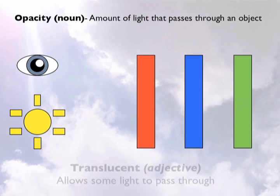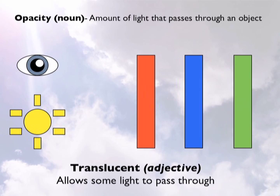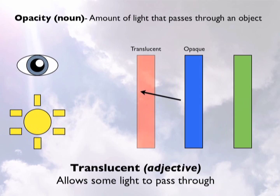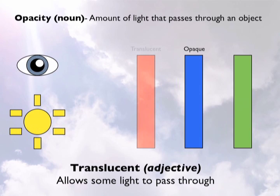The next level of opacity is called translucent. This means that some light can pass through the shape. The light shining on the translucent red shape passes through the red shape, reflects off the blue opaque shape, and back to the viewer's eye. The viewer sees the blue shape through the red shape but cannot see the green shape behind the blue shape.